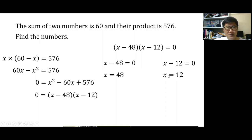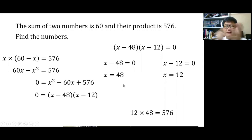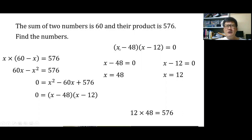Check: 48 plus 12 equals 60 — the sum is correct. And 48 times 12 equals 576 — the product is correct. The two numbers are 48 and 12.